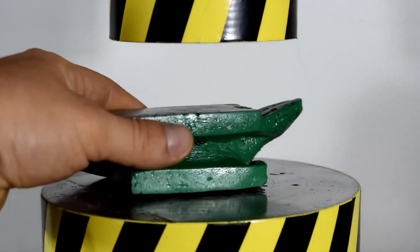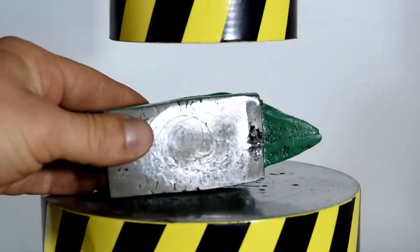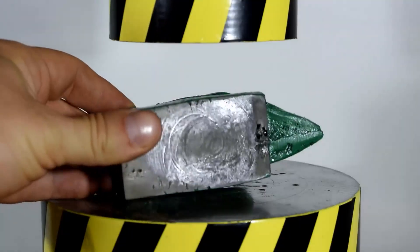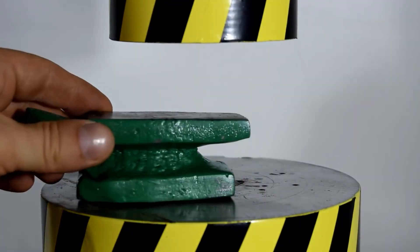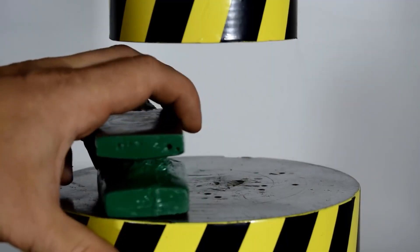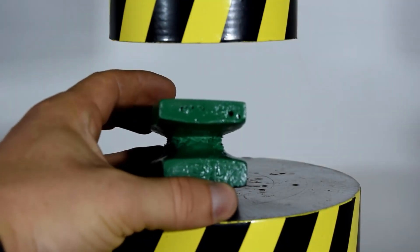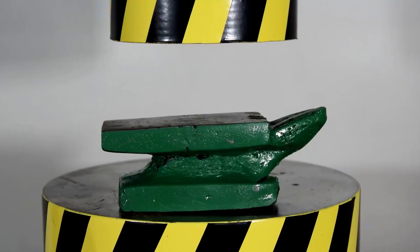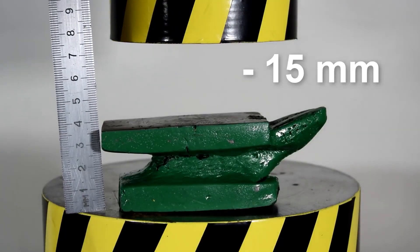As expected, this anvil received the most serious damage where it has the thinnest place. Now let's see how much the height of this anvil has changed. So, its height has changed by 15 mm. It has shrunk.